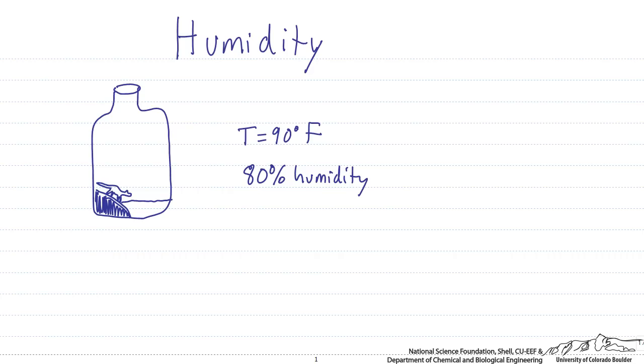So there are a couple of ways of measuring humidity of a system. First we can do the absolute humidity, the relative humidity, the molal humidity, or the percentage humidity.